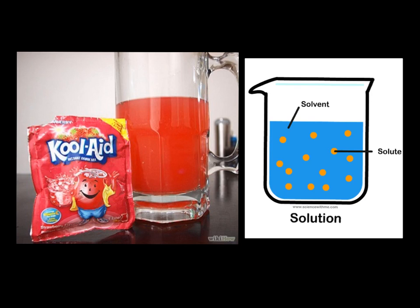Kool-Aid is an example of a solution. The Kool-Aid mix — which is the solid — is the solute, and the water is the solvent. When we mix them together, the solute of Kool-Aid dissolves in the water and we can't see the different particles — it looks like one substance. Other similar examples would be making lemonade, coffee, hot chocolate, and so on.